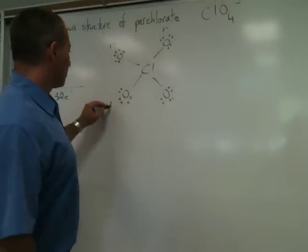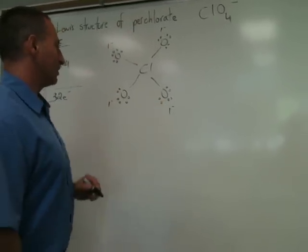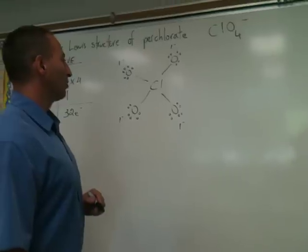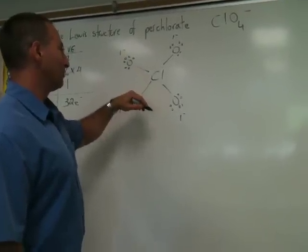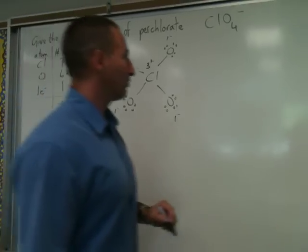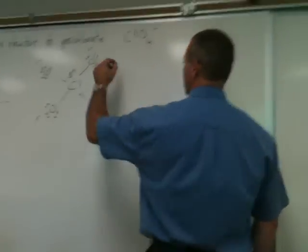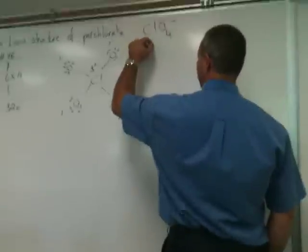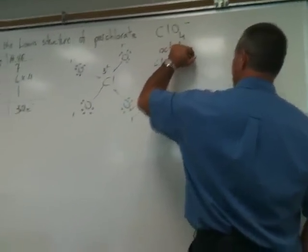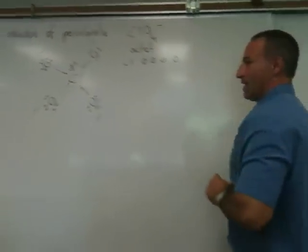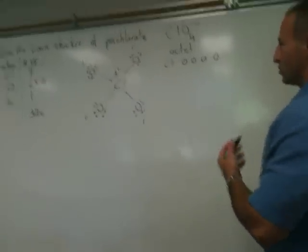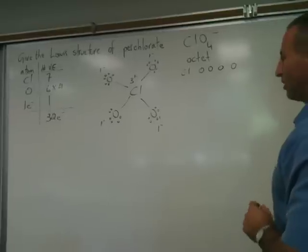If we draw this, each one of these oxygens will have a formal charge of negative one, and the chlorine will have a formal charge of plus three. We'll see why in a moment. Let's first do the accounting of the octets. This process is simply to show how I'm going through the steps — it's not necessary once you've mastered how to draw Lewis formulas.